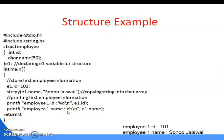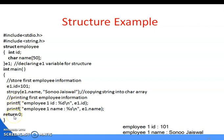Here is the structure example: '#include <stdio.h>', '#include <string.h>'. We declare 'struct employee { int id; char name[50]; } u1;' — u1 is the structure variable through which you access data members. We set 'u1.id = 101', use strcpy to set 'u1.name = "Sonoo"', then printf to display the values, and return 0. These are the outputs of the structure example.